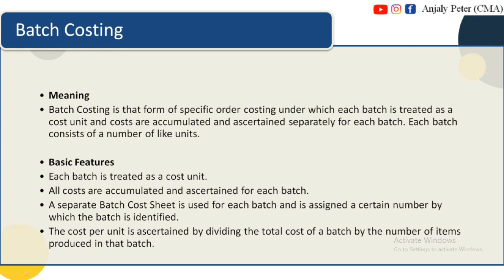Batch Costing is that form of specific order costing under which each batch is treated as a cost unit. Costs are accumulated and ascertained separately for each batch. Each batch consists of a number of like units — that means similar units — produced in batch production industries.